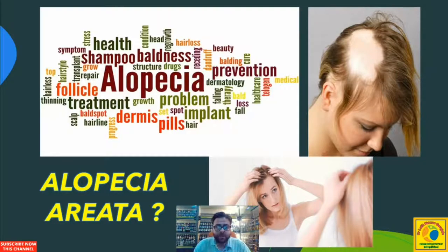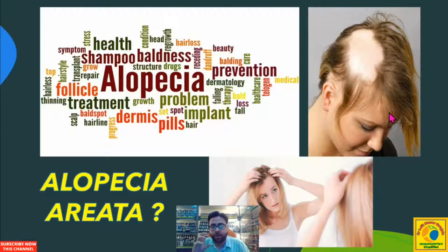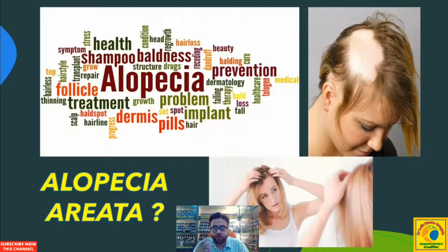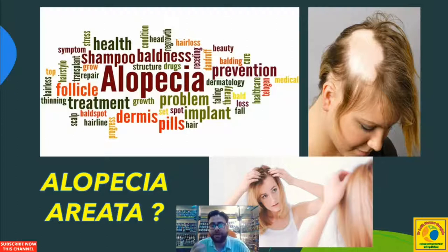What is alopecia areata? As you can see in this slide, alopecia areata is when a person loses hair from a specific patch on the skull or some part of the body. It is not only found on the skull — it can also be found on the beard and mustache. Alopecia areata is a localized loss of hair in patches wherever there is hair on the body.